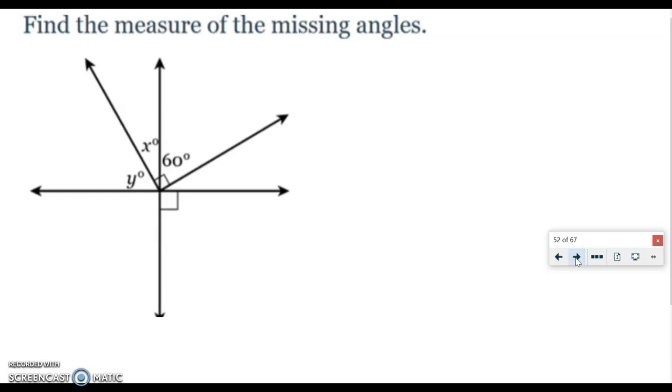All right, so here's our first example. It says find the measure of the missing angles. You've got angle Y and angle X. And what we want to do is find out what those measurement lengths are. So we know this angle over here is 90 degrees. This angle is 60. This angle right here is 90 degrees because the little square means 90 right there. So that's some of the information we get.